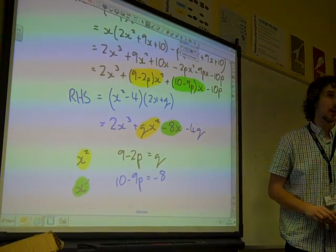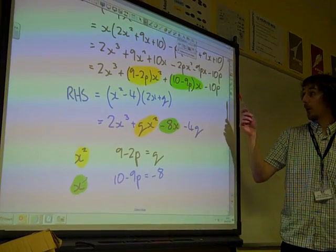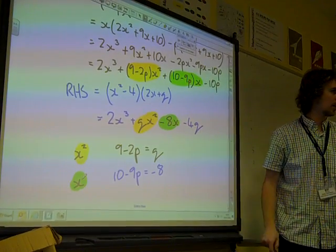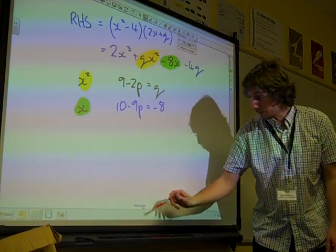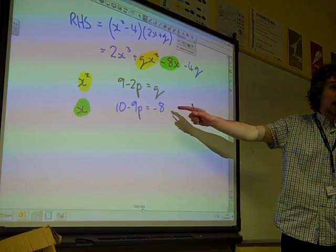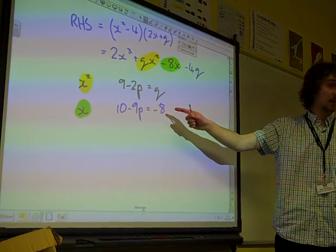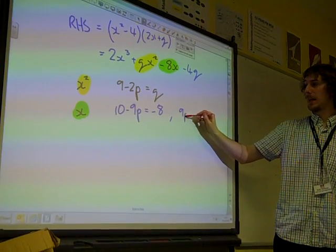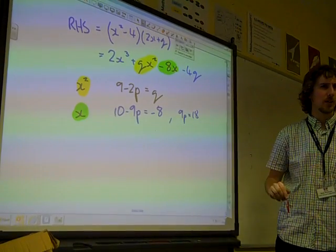And we could write it. I'm not sure we're going to need it. But we've also got that minus 10p is minus 4q. I think we'll use that as a check at the end. This one, Tom spotted it straight away. This actually gives us that what? 9p is 18 if we rearrange that.